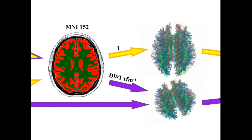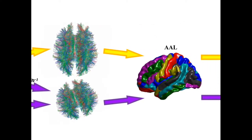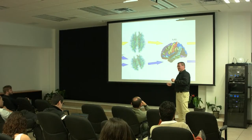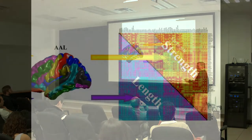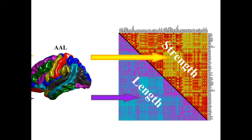The transformation to MNI152 is used to bring the diffusion data into stereotaxic space. In native space, you generate all the probabilistic tracks — I seeded 10,000 times from every voxel of the white matter — and you have a massive number of streamlines. You record the endpoints of each streamline, then use an atlas to estimate the connectivity between all regions: the average connectivity and the average length of the connections. This gives you a connectivity matrix with the length and strength of connections between every region and every other region in the atlas.